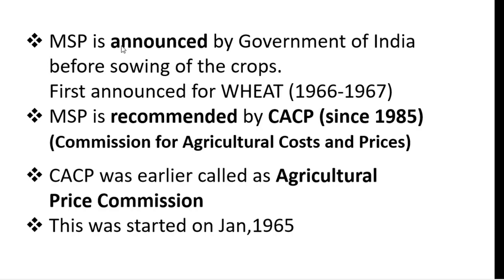CACP has been recommending MSP since 1985. Earlier, CACP was called the Agriculture Price Commission, which was started in January 1965. It was then renamed as Commission for Agriculture Costs and Prices in 1985, and since then it recommends the Minimum Support Price.